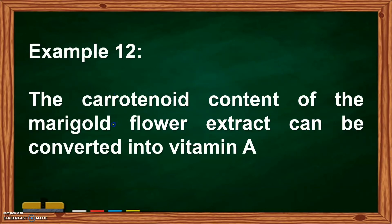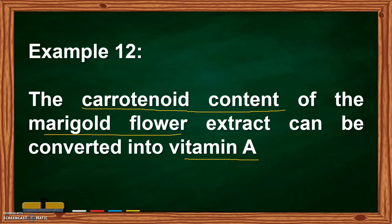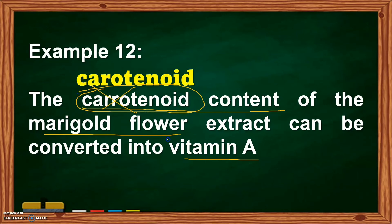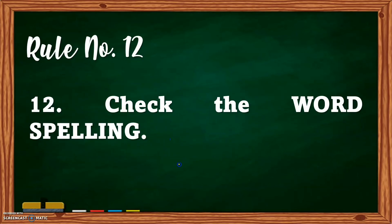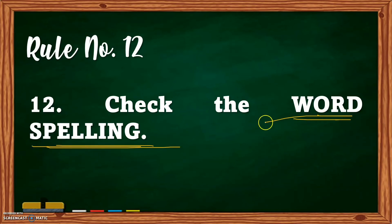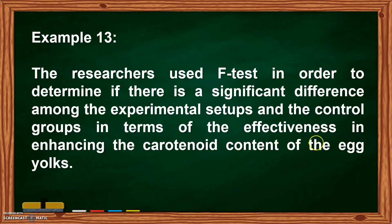Example number twelve: 'The carotenoid content of the marigold flower extract can be converted into vitamin A.' What is wrong? It is the spelling of 'carotenoid' — it should be 'carotenoid.' Rule number twelve: you have to check the word spelling. Always verify that the spelling of the words you are using is correct.